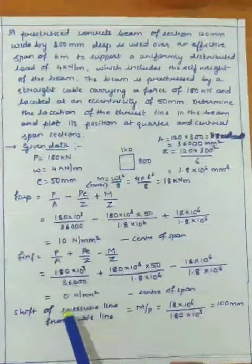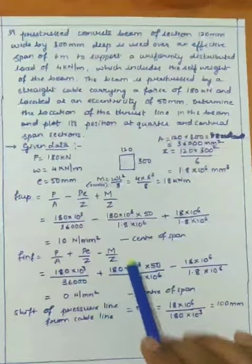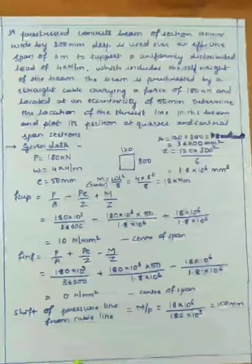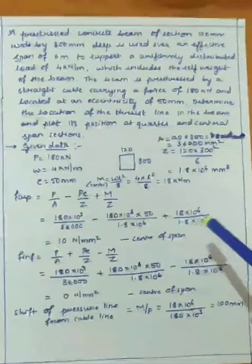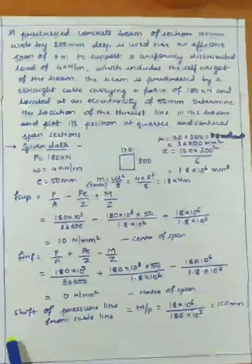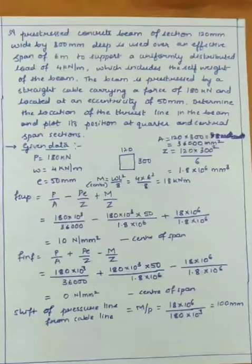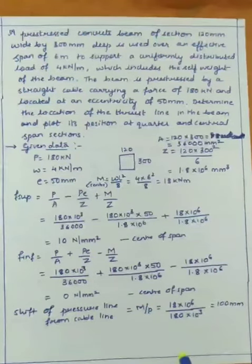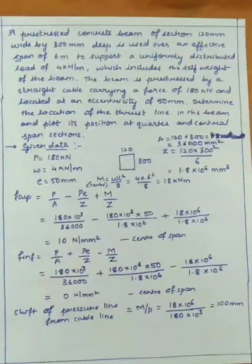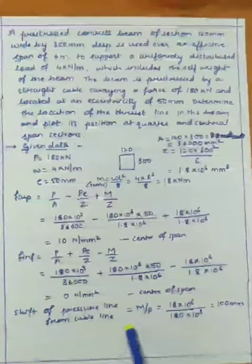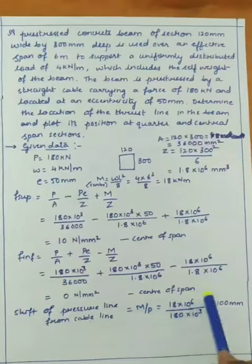F inferior = P/A + PE/Z − M/Z = 0 N/mm² at center of span. The shift of the pressure line from the cable line at mid-span is M/P = 18 × 10⁶ / 180 × 10³ = 100 mm.